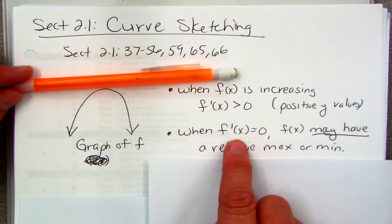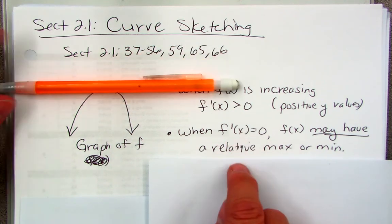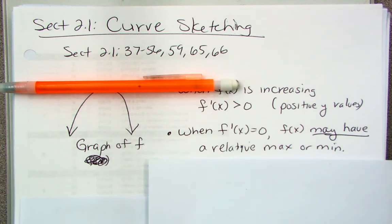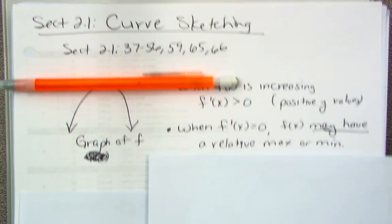So that's what that means. When I know that the slope of the tangent line is equal to zero, then the graph of f may have a relative max, like this one, or a relative min. Let me scoot this up.